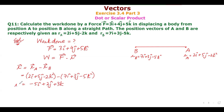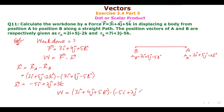Now work done = F · r: F = 3i + 4j + 5k, r = -5i + 2j + 3k. Dot product = (3)(-5) + (4)(2) + (5)(3) = -15 + 8 + 15 = 8. Work done = 8 units.